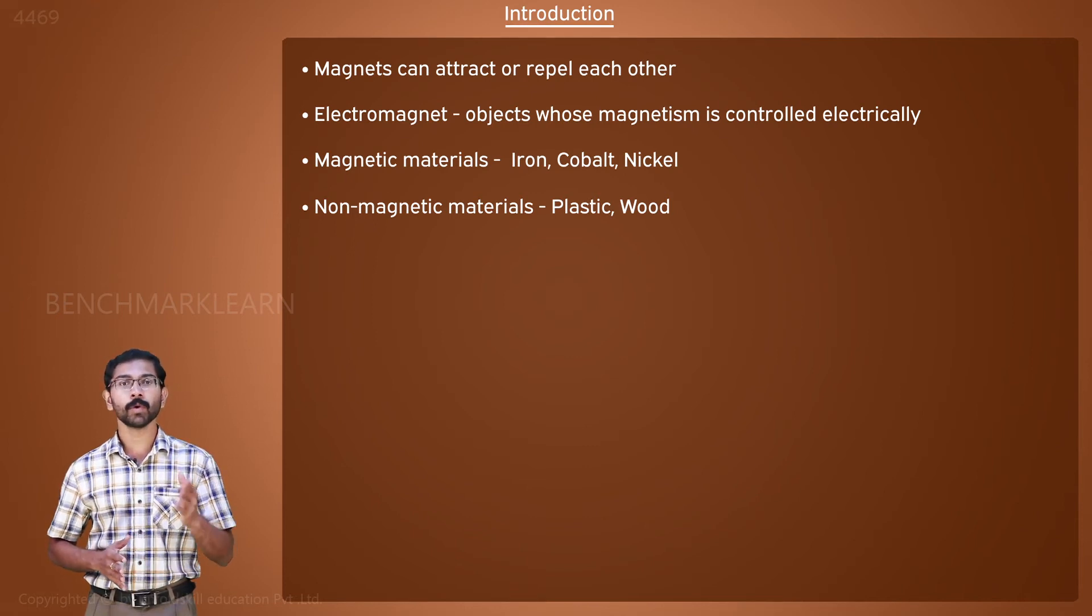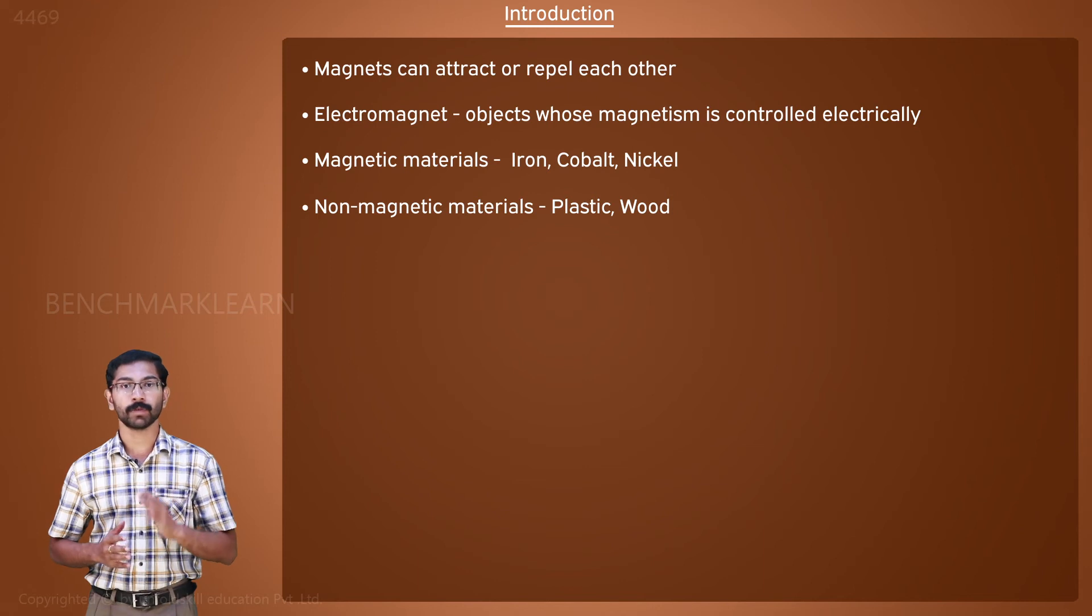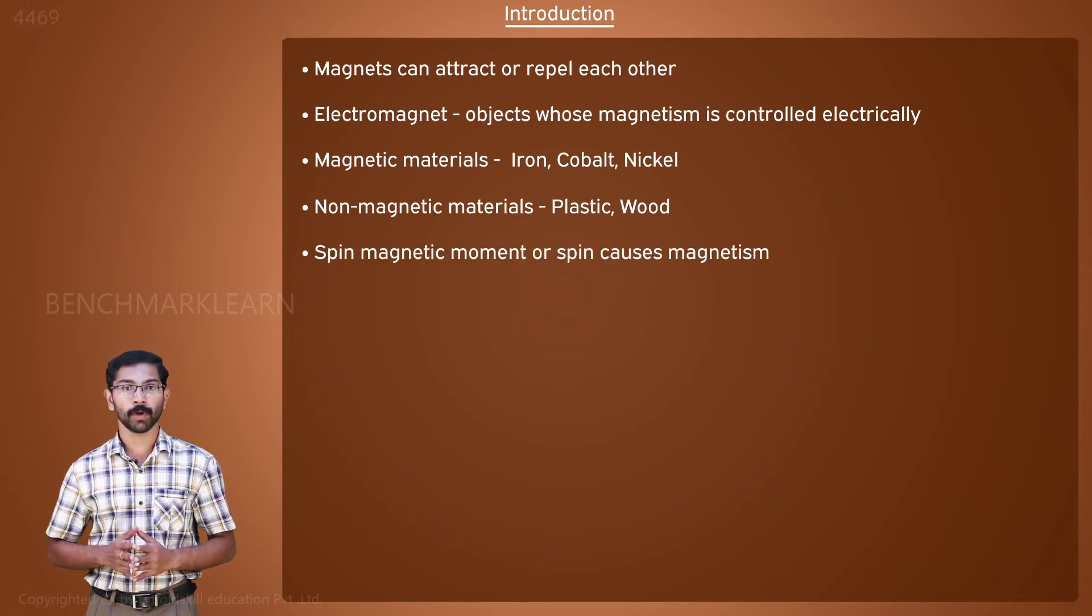But what causes magnetism? Electrons. Like electric charge, electrons also have a quantum property called spin-magnetic moment or spin.